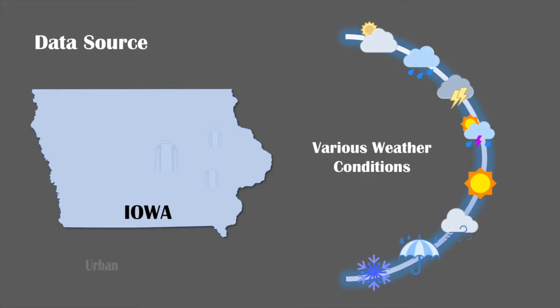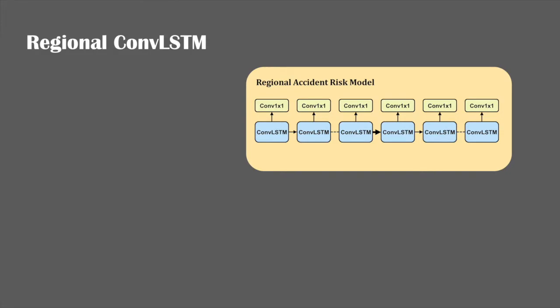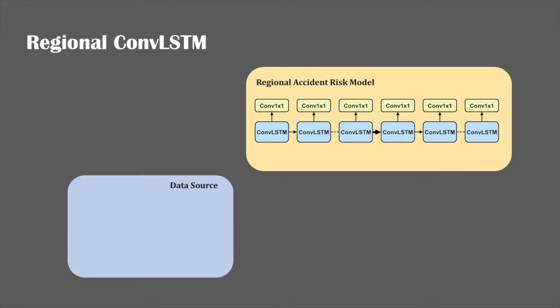For regional prediction, we construct a single four-layer convolutional LSTM model. The crash-related data are from Department of Transportation, National Weather Service, and Google Earth, and all data are converted into feature maps.